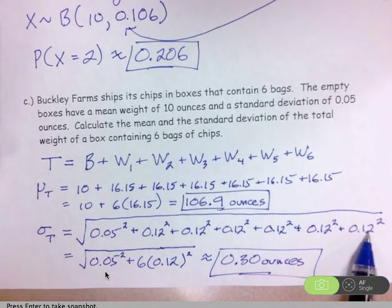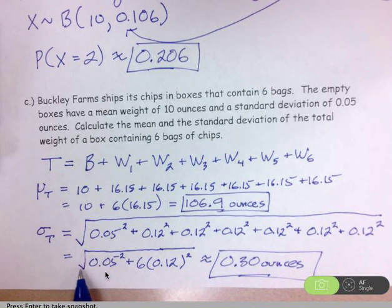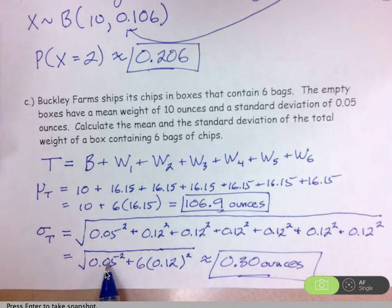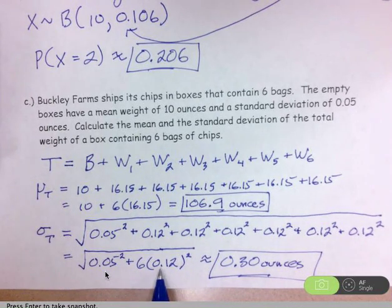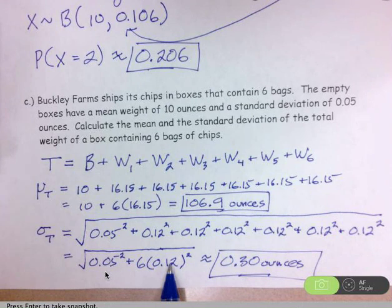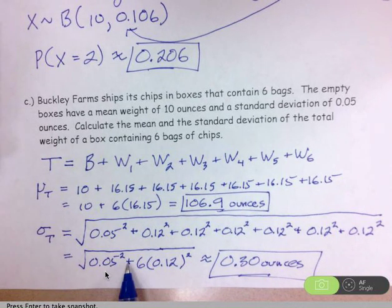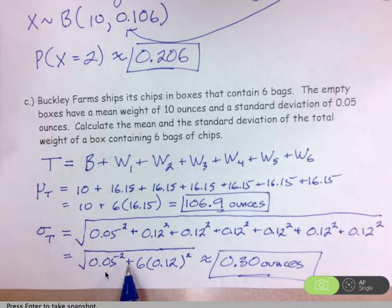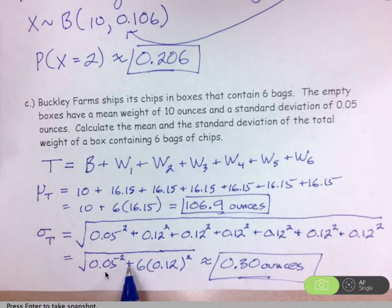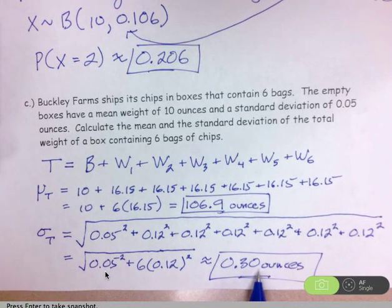Of course, you might not want to enter that into your calculator. So you need to take the square root of the 0.05 squared plus six of the 0.12 squares. It's really important though that you square the 0.12 first in order to make the variance. Then you can multiply by six. Then you can add this as the variance, the square of the standard deviation for the box, and then take the square root. So the standard deviation then is 0.3 ounces.